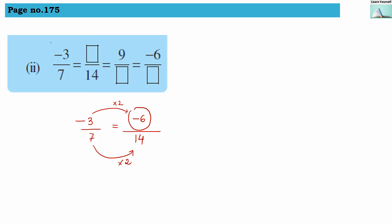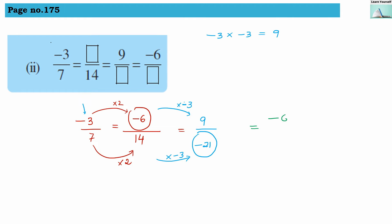The next number is 9 in the division we have to guess. We multiply 3 by 3 to get 9, but 9 is positive while 3 in the original is negative. To get a positive answer, we must multiply by minus 3, because minus times minus gives positive. So here we multiply by minus 3, and 7 into minus 3 gives minus 21.